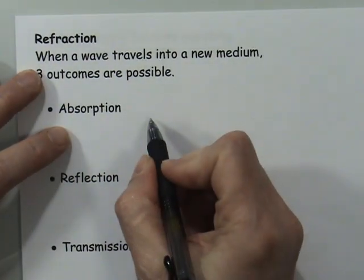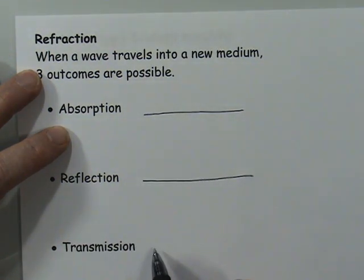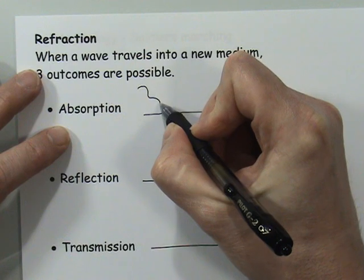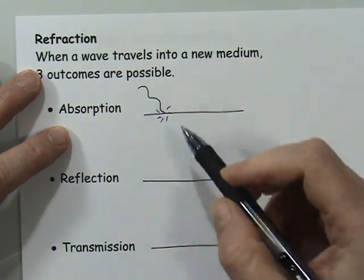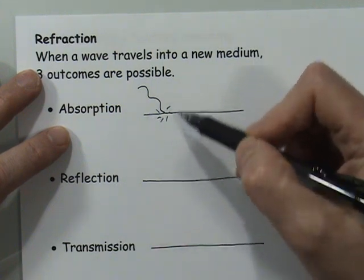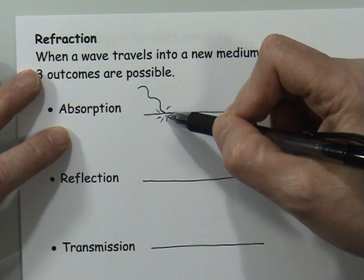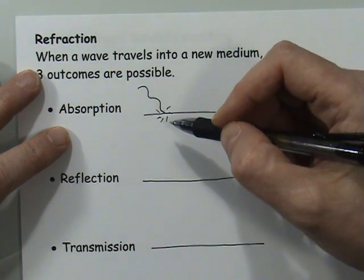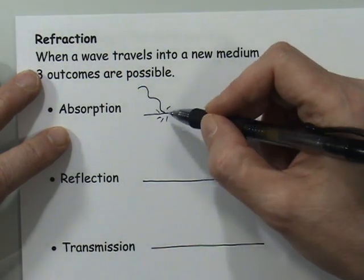I'll draw a couple of pictures, one for each of these three: absorption, reflection, and transmission. The idea with absorption is that when the wave comes in, it is absorbed by the atoms at that boundary between the surface. For example, if this was light traveling into water, some of the light will be absorbed by the atoms in the water and cease to exist — their energy is absorbed, probably mostly turning into thermal energy, but there are other ways the energy can transform.